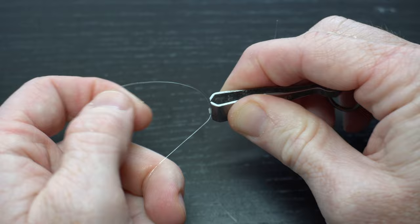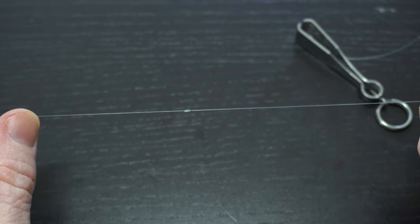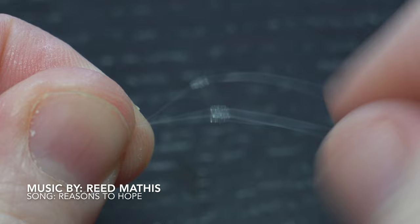See how thin this knot is? One thing to keep in mind is this knot only works with two lines sized close to each other. This is a strong knot, but will come loose if you have too much discrepancy between the thicknesses of the two lines.